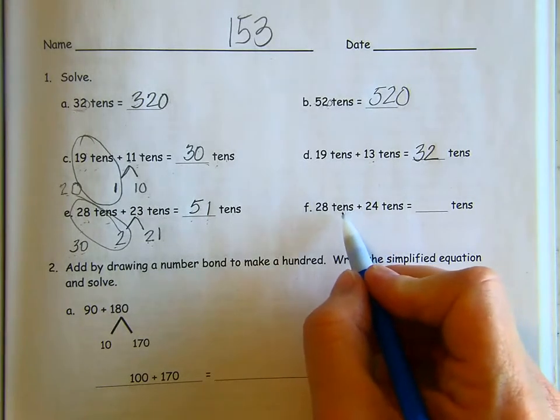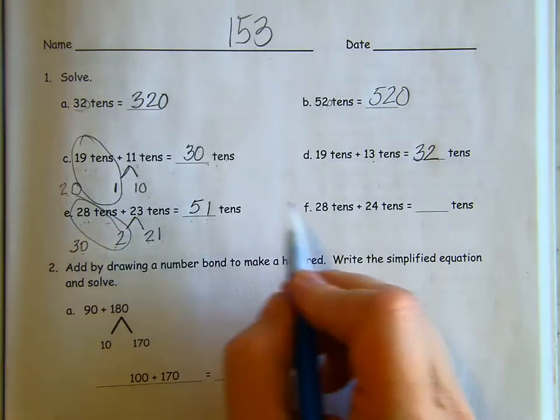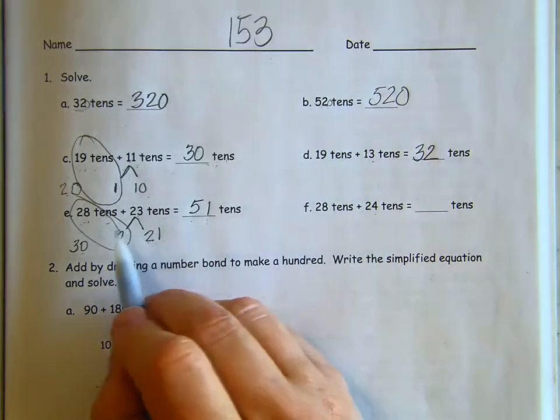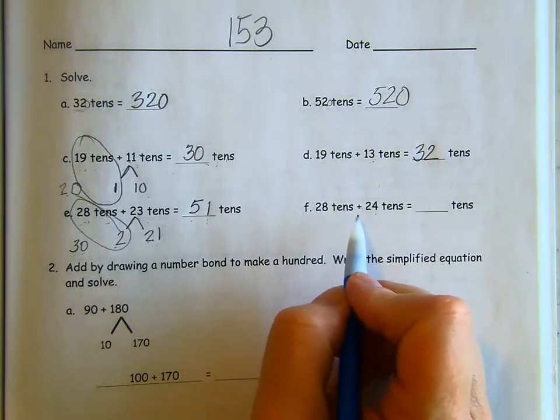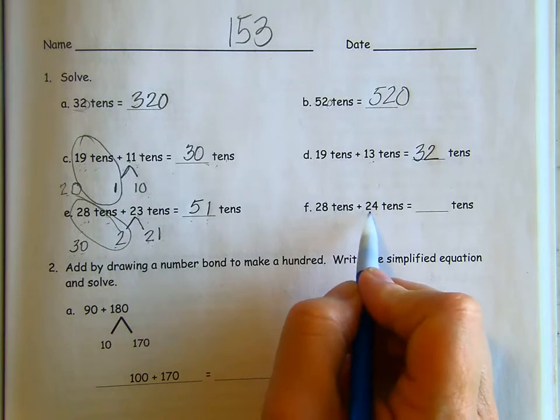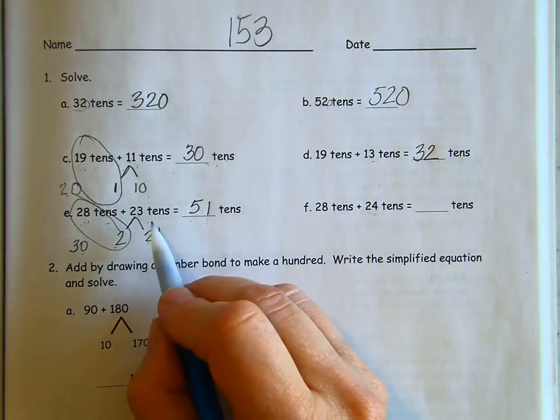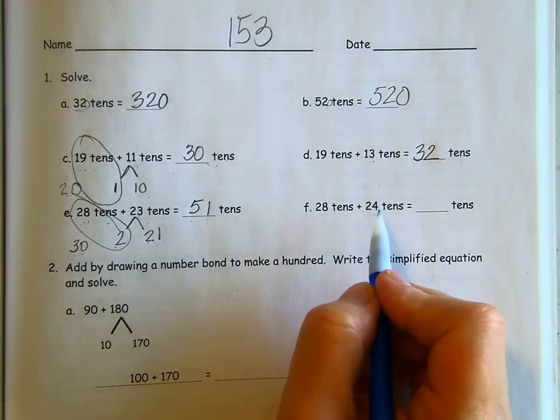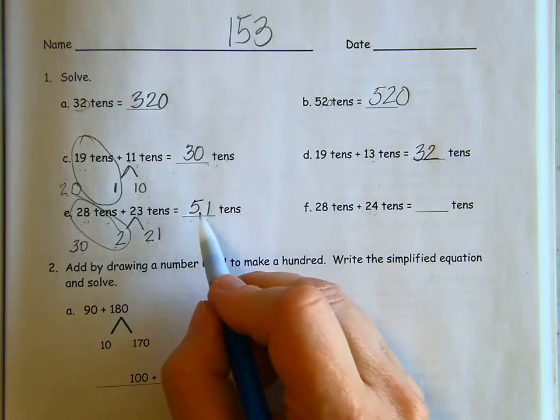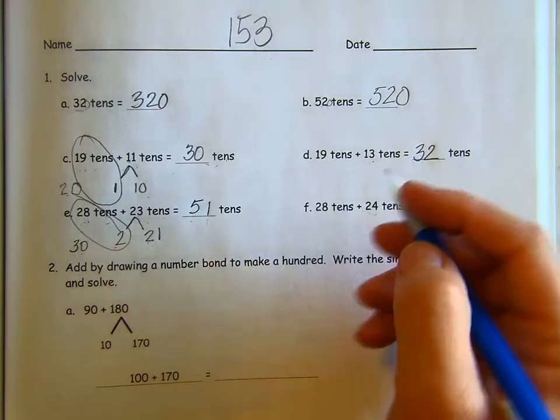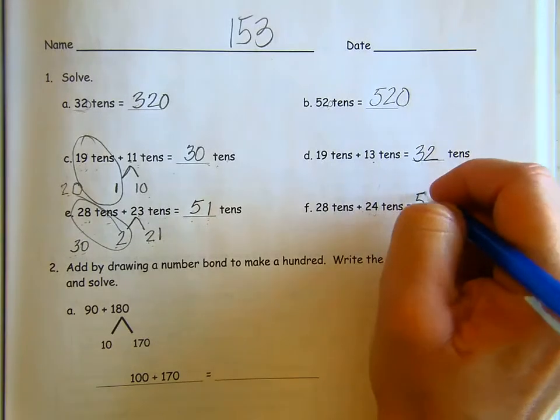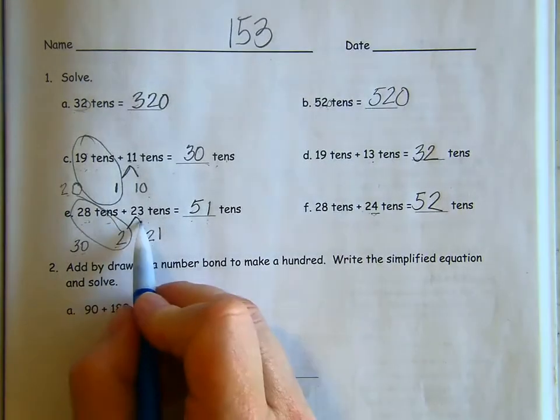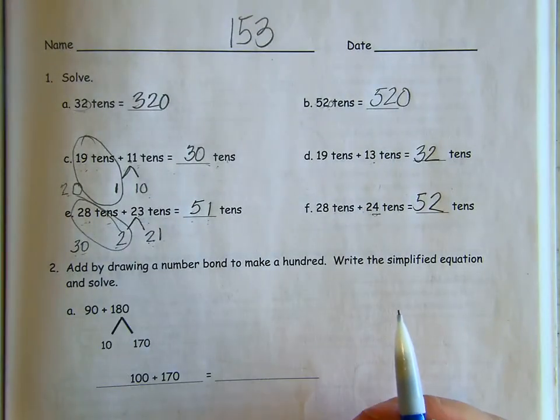Okay. Here we have 28 plus 24. Instead of adding 23, we're adding 24. So how much more is 24 than 23? The difference is just one. They added one more. So we can just add one more to our sum here and know that this is 52. It's going to be one more than 28 plus 23.